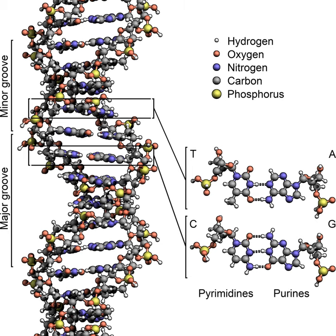As DNA polymerases can only extend the DNA strand in a 5' to 3' direction, different mechanisms are used to copy the antiparallel strands of the double helix. In this way, the base on the old strand dictates which base appears on the new strand and the cell ends up with a perfect copy of its DNA.